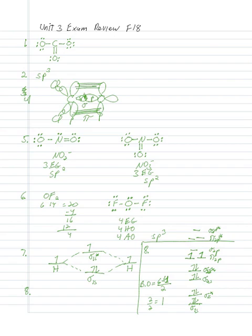Number one says: the number of SP2 hybrid orbitals on the carbon atom in CO3 2- is what? Now, this one has a little bit of extra stuff. It doesn't really matter that it's CO3 2-. If you're making SP2 hybrid orbitals, how many are you making? You're making three, because you're mixing an S orbital and two P orbitals — that's three atomic orbitals. If you mix three atomic orbitals, you get three hybrid orbitals.